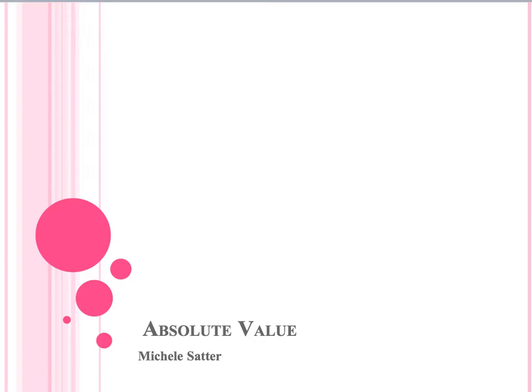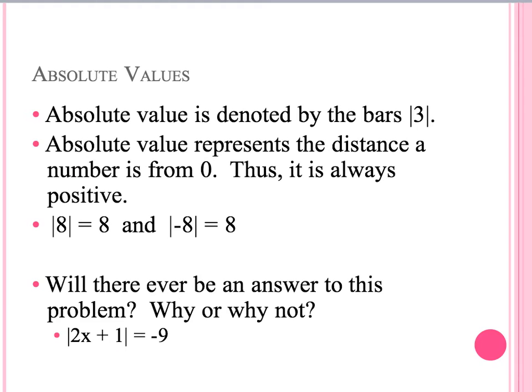We are going to talk about absolute values now. Absolute values get their names by denoting them with these bars. Absolute values represent the distance numbers are away from 0. Thus, it is always positive.